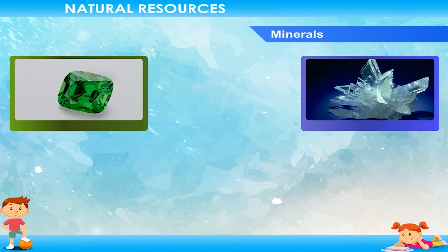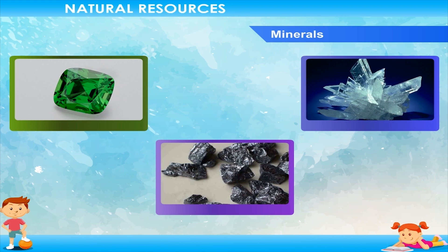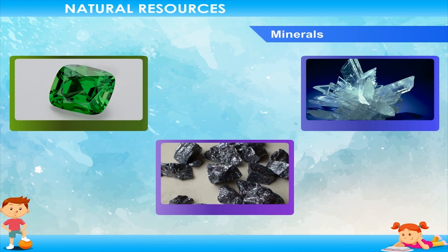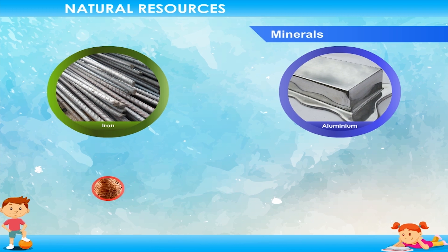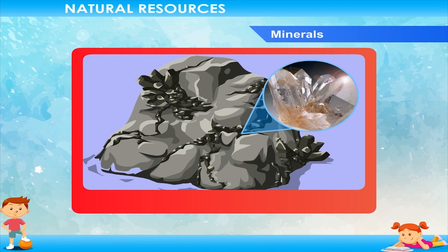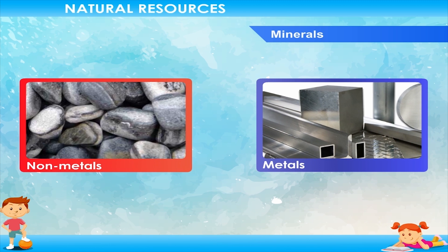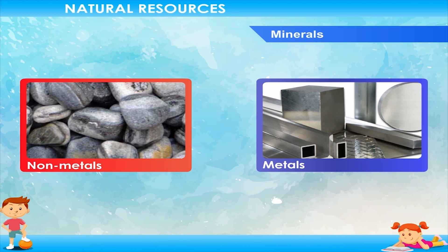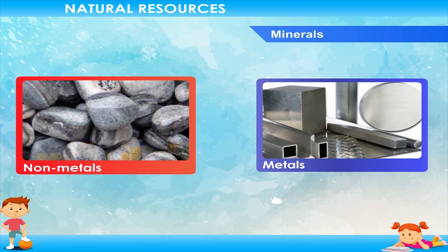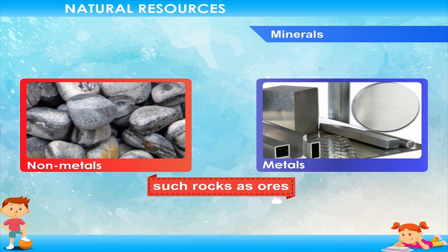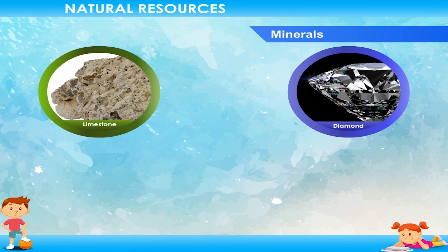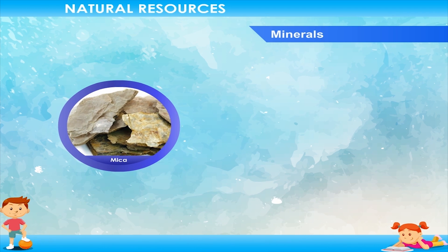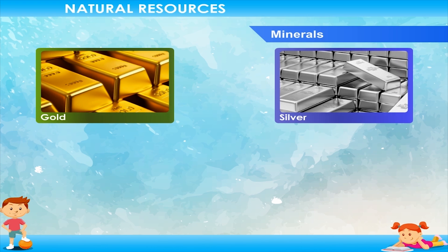Minerals are solid, naturally occurring substances from which metals are extracted, and are used for the preparation of various metals. We use many metals in daily life such as iron, aluminium, copper and steel. Most minerals are found buried in rocks. Rocks are made up of metals and non-metals, usually all mixed together. Some rocks have a lot of a particular metal or non-metal, and we call such rocks ores. India is rich in mineral deposits. Besides large quantities of iron ore, India also has manganese, mica, copper, zinc, limestone, diamond and gold. Mica is used for making electrical goods. Gold and silver are used for making beautiful ornaments and jewellery.